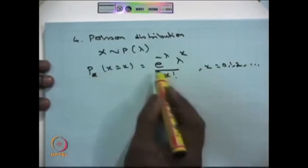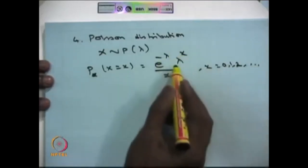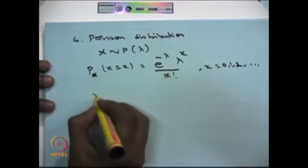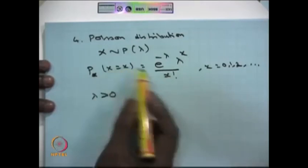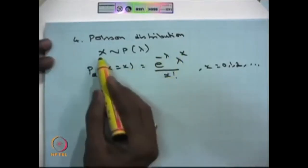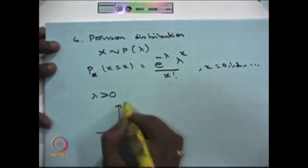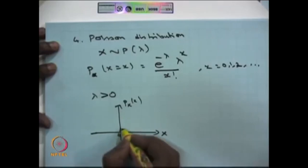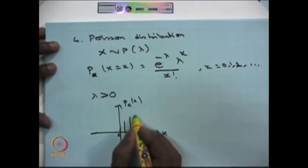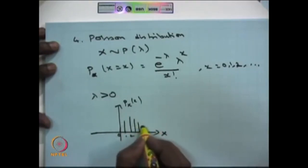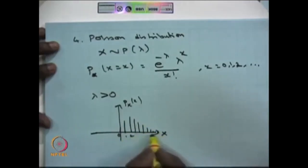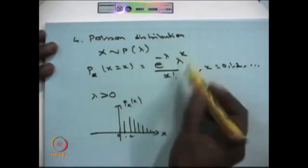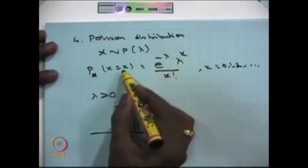This is a discrete type random variable with countably infinite mass points. The masses are e^(-lambda) * lambda^x / x!, and lambda is strictly greater than 0. If you sum over all x from 0 to infinity, the total is 1, and all masses are greater than 0. For a fixed lambda you can draw the PMF, and it has countably infinite positive mass points with 0 everywhere else.